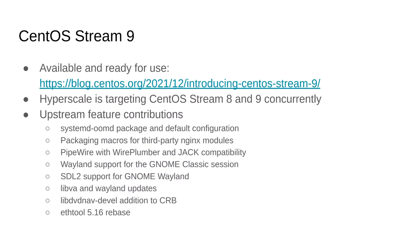Speaking of CentOS 9 — it exists. We target Stream 8 and 9 concurrently, and we've also been using the SIG as a way to funnel contributions upstream to CentOS proper as much as possible. We don't want to maintain things in Hyperscale if we don't have to. Throughout the last few years we've been able to get a number of changes into CentOS Stream proper, which means those are things we no longer have to maintain ourselves — that list is available for your reading in the slides.